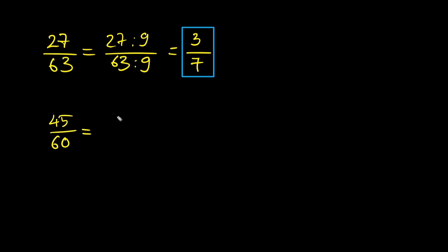What about 45 over 60? We cannot divide by 2 because 45 is odd, but both numbers end in 5 or 0 so we can divide by 5. 45 divided by 5 is 9. 60 divided by 5 is 12.